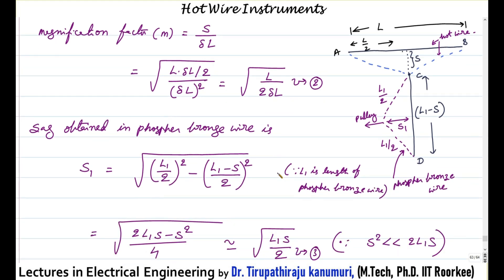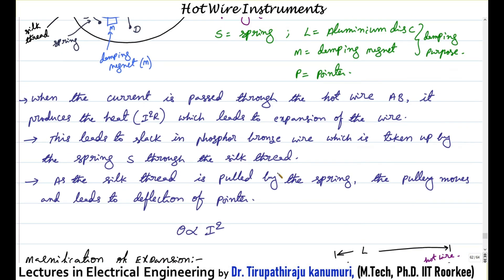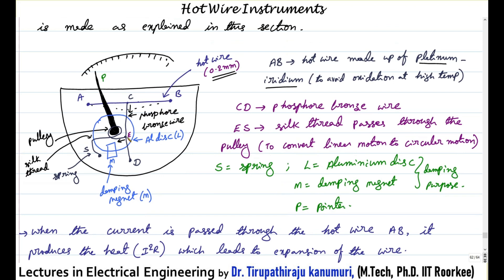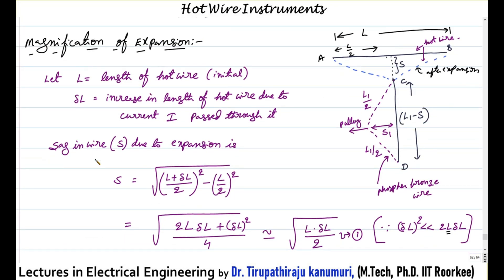The sag obtained in the phosphor bronze wire: from the original construction, at point E the silk thread is connected and always tries to pull. When point C moves downwards, the phosphor bronze wire develops a sag, pulled by the silk thread. The length of this phosphor bronze wire is fixed at L1; taking in the center gives L1 divided by 2.